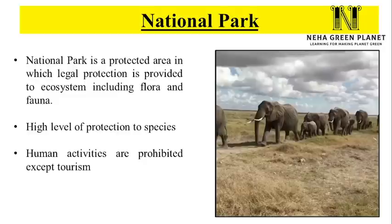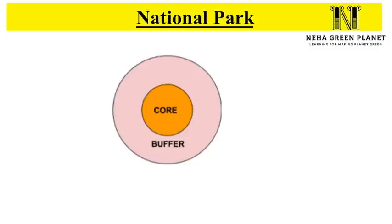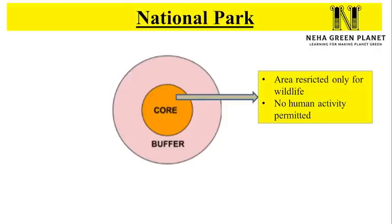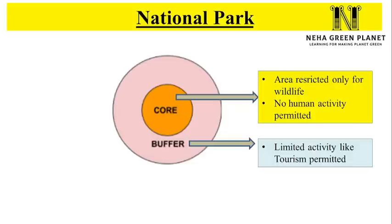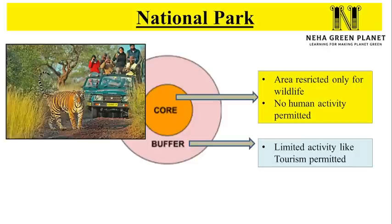Only tourism is allowed, and that too in the peripheral region of the national park. In a national park, there are broadly two types of areas: first is the core area — the central part — and second is the buffer zone, which is the peripheral region. Core area is restricted only for wild animals; no human activity is permitted in the core area. Wild species can move around freely without any interference. Buffer zone is the peripheral region of the national park where only limited activity like tourism is allowed, and the state or government also gets revenue from this.